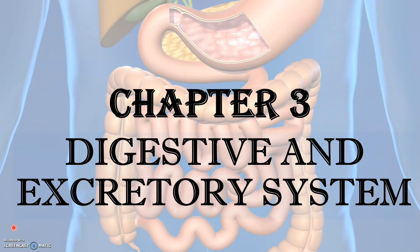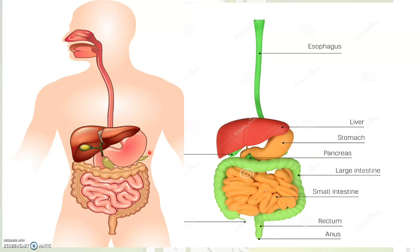Hello dear children, welcome back to science class. In our last class, we studied what is a digestive system and we also saw what are the different organs that form the digestive system — organs like mouth, food pipe, stomach, small intestine, liver and pancreas. We have already seen them in our last class. So now, let's quickly have a look at what we studied in our previous class.